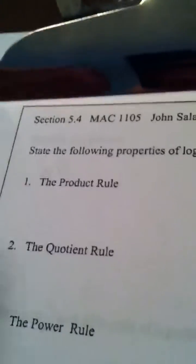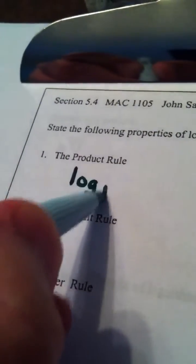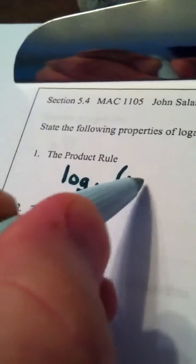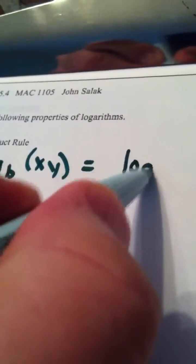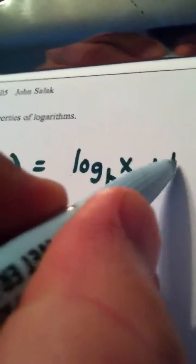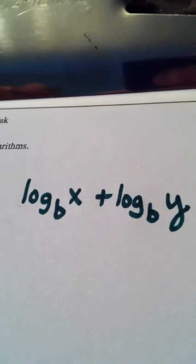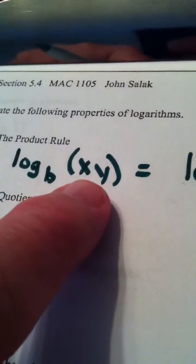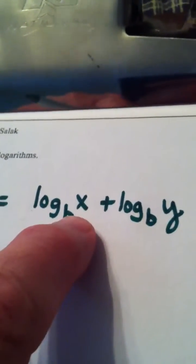So the product rule basically says this: if I have any log function, log base b, and I'm putting in a product, my answer is going to be log base b of x plus log base b of y. That is referred to as the product rule or product law of logs. When you're putting a product into a log function, a sum comes out—the sum of the logs of the individual factors.